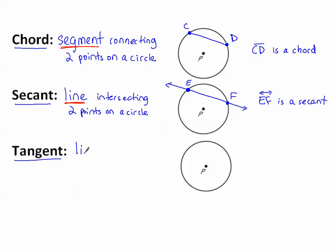A tangent is also a line or really any point of a line. So it could be a segment or a ray. This is a line intersecting a circle at one point.